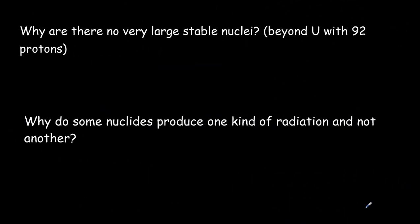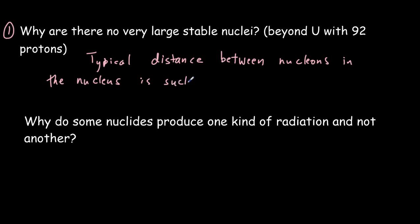Here we have two questions that you might be asking yourself. The first is, why are there no very large stable nuclei? It turns out uranium with 92 protons is the largest stable nuclei. So why is that so? And simply because the typical distance between the nucleons in the nucleus is such that the attractive force, that is, the strong nuclear force, cannot dominate.